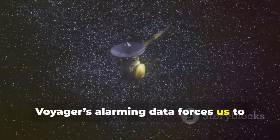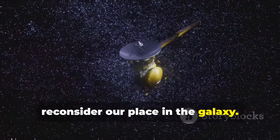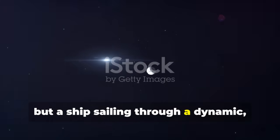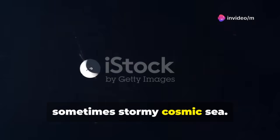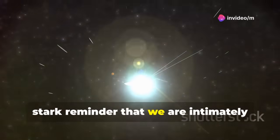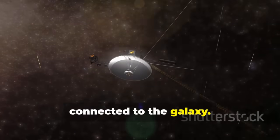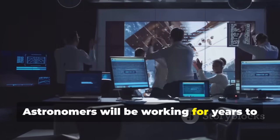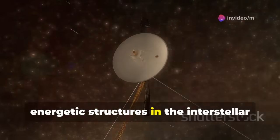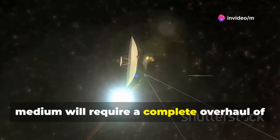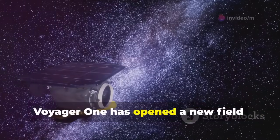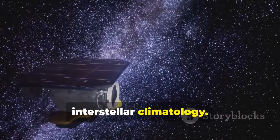Voyager's alarming data forces us to reconsider our place in the galaxy. Our solar system is not a stable island, but a ship sailing through a dynamic, sometimes stormy, cosmic sea. The compression of the heliosphere is a stark reminder that we are intimately connected to the galaxy. Astronomers will be working for years to understand these findings. The existence of dense energetic structures in the interstellar medium will require a complete overhaul of our galactic models. Voyager 1 has opened a new field, interstellar climatology.